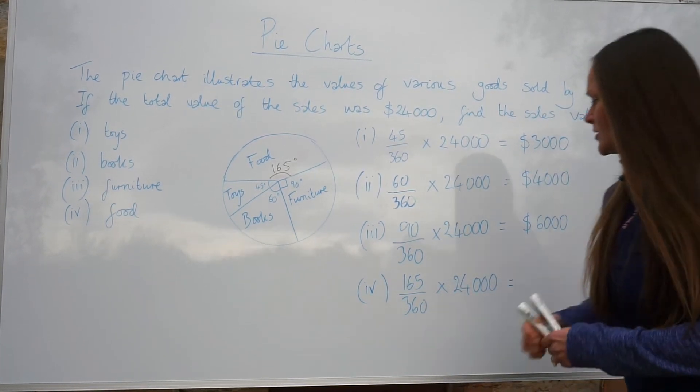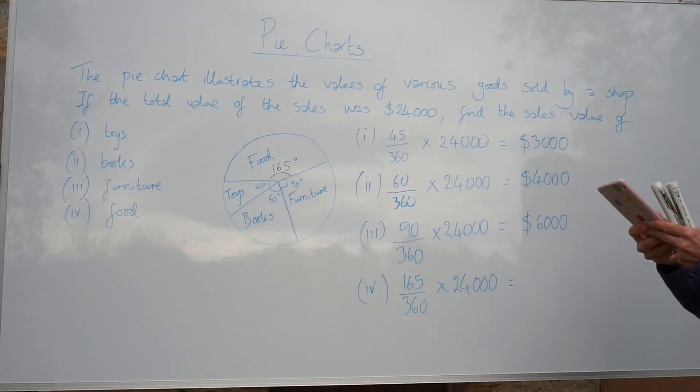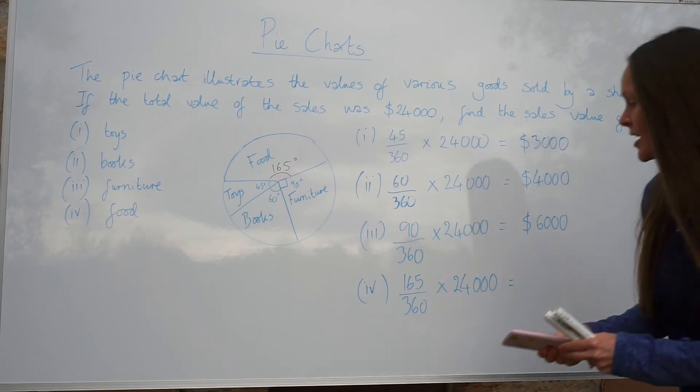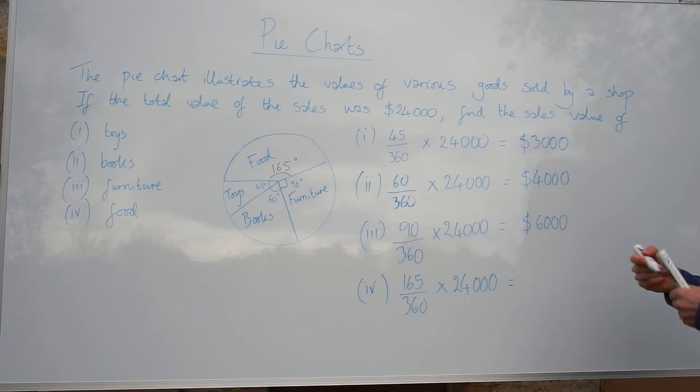So this time I'm going to cheat and use my calculator. We've got a fraction, 165 out of 360. And when I multiply by 24,000, I get 11,000.